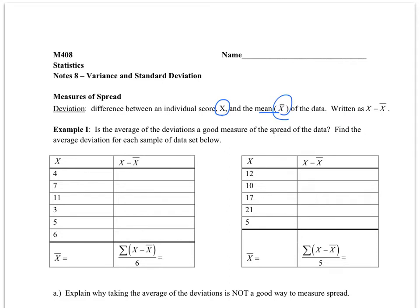In some cases, the deviation is positive, and in some cases it is negative. It just depends on whether the value is greater than or less than the mean. So the first thing we want you to figure out is whether the average of the deviations is a good measure of spread for the data — meaning will that value tell us anything about how the data is spread about the center?